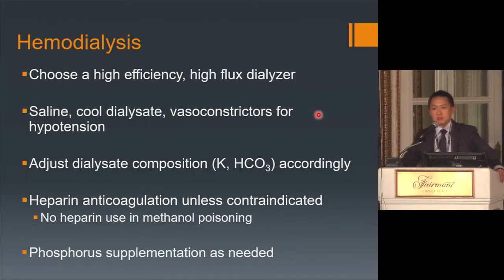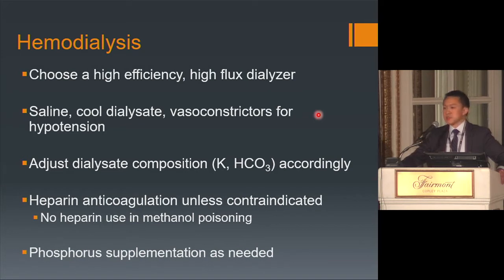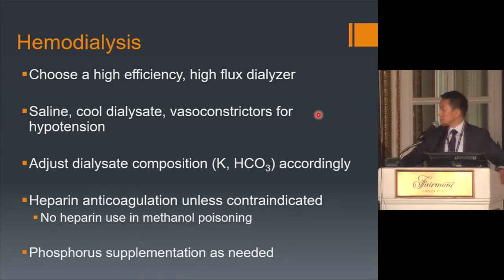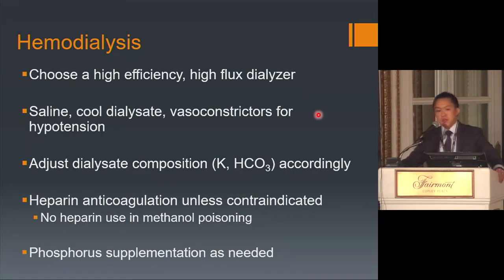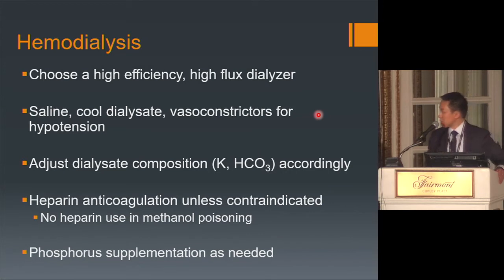Patients presenting with intoxications are often unstable and hypotensive, potentially needing saline infusions, cool dialysate, and vasoconstrictors. Many have metabolic and acid-base disturbances, so adjust dialysate potassium and bicarbonate accordingly. Heparin anticoagulation should be given unless contraindicated — notably in methanol poisoning, where patients are at risk for cerebral hemorrhage, making anticoagulation potentially dangerous. Some patients are hypophosphatemic and need phosphorus supplementation.